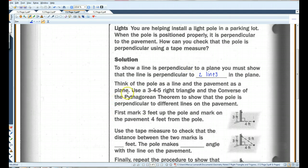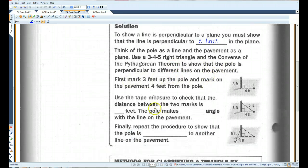Okay. So, think of the pole as a line and the pavement as a plane. Use a 3-4-5 right triangle and the converse of the Pythagorean theorem to show that the pole is perpendicular to different lines on the pavement. So, first mark three feet up the pole. Then mark on the pavement four feet from the pole.